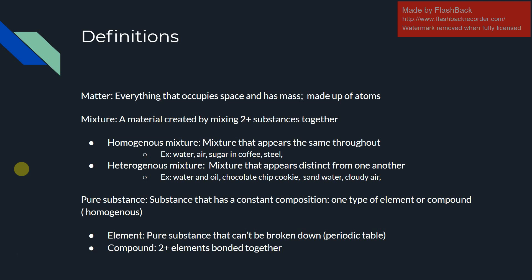A heterogeneous mixture is a mixture that appears distinct from one another. For example, if you have water and you put some oil into it, the oil is going to sit atop the water, creating a mixture of two different things that are distinct. With a chocolate chip cookie, you have chocolate chips spread apart from the cookie dough, making those areas distinct from each other. With sand and water, you have sand that sinks to the bottom and can't be dissolved. And with cloudy air, you have clear skies and clouds which are distinct from each other.